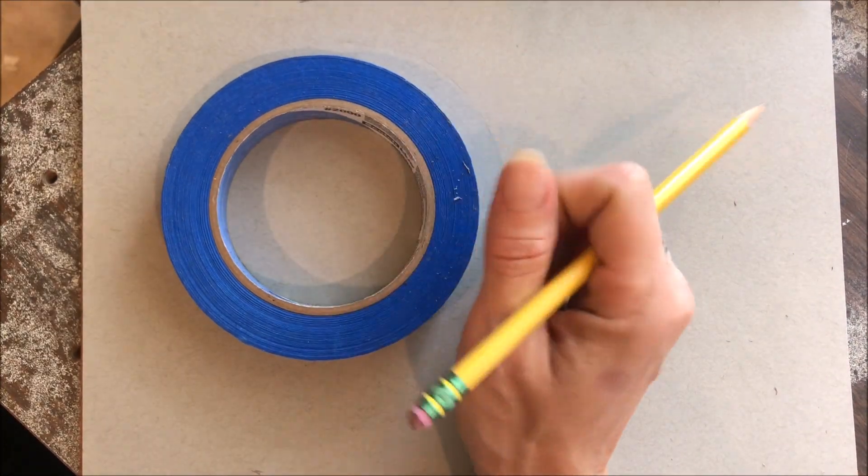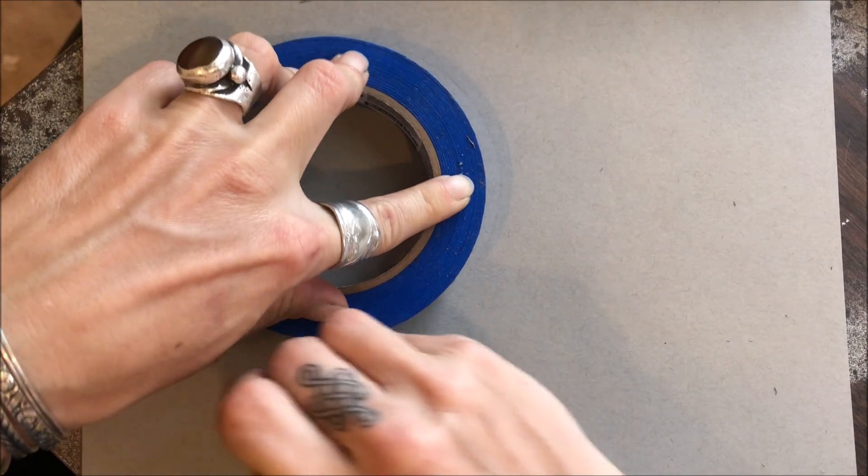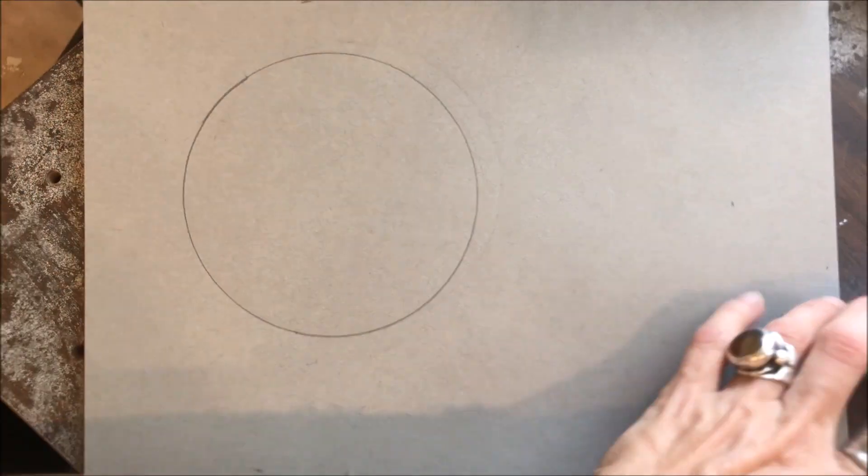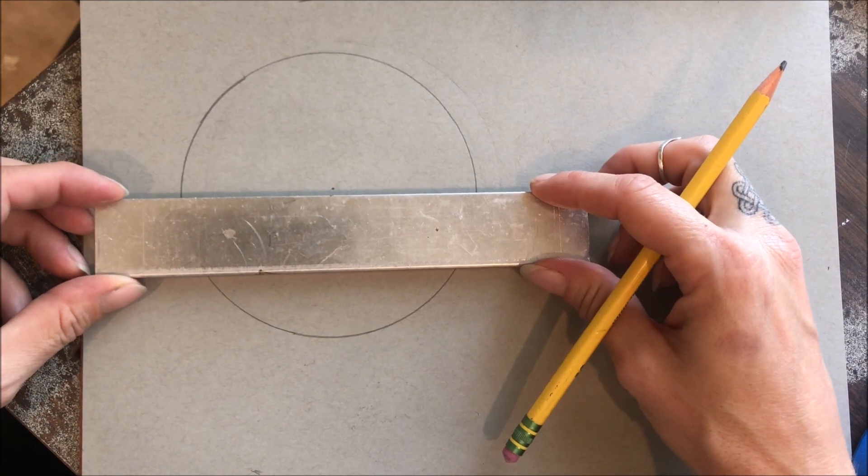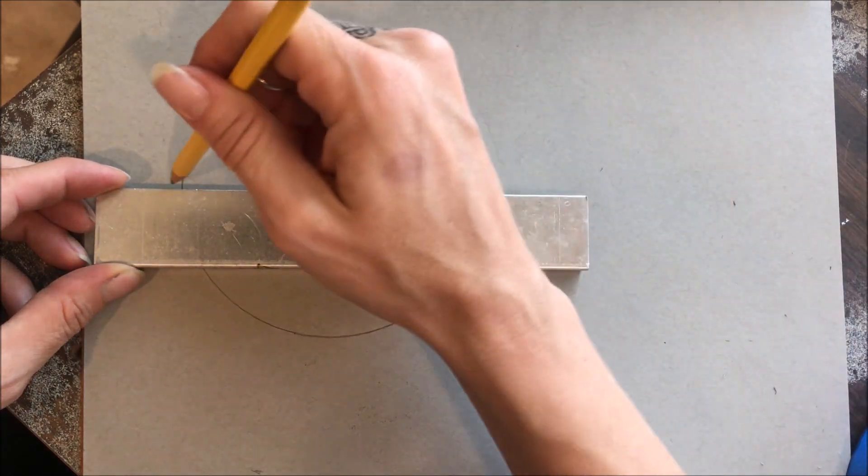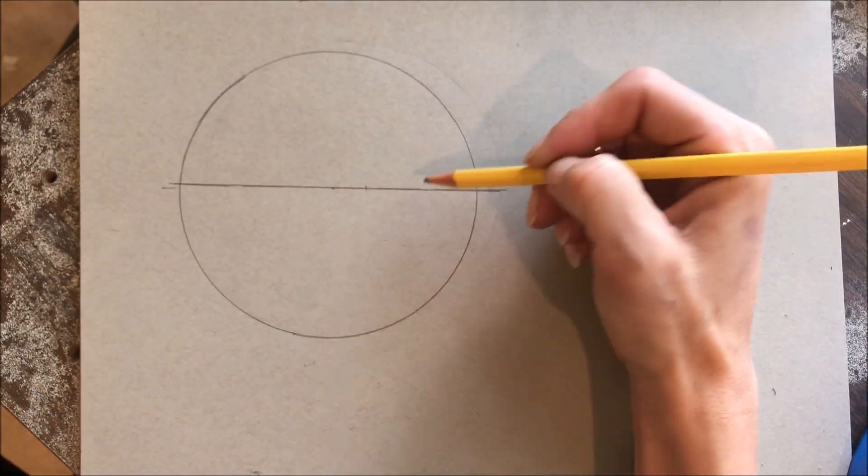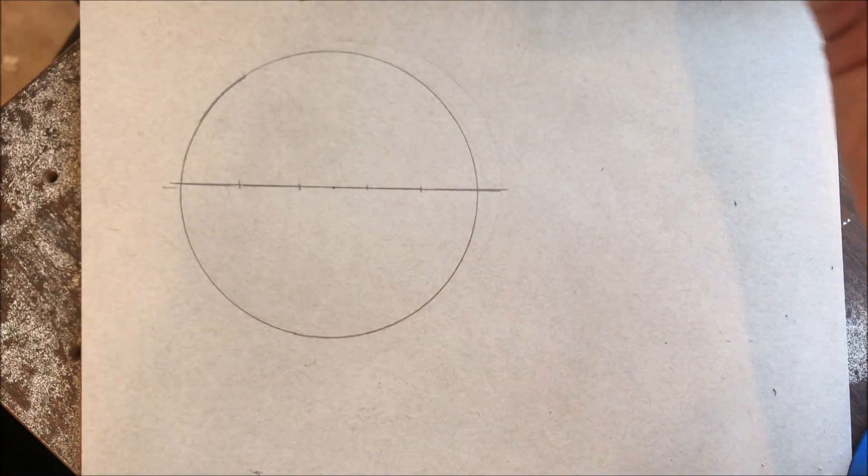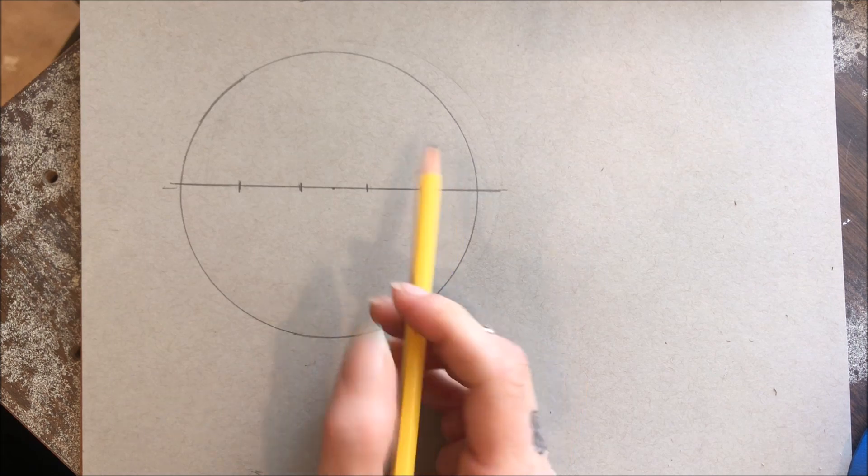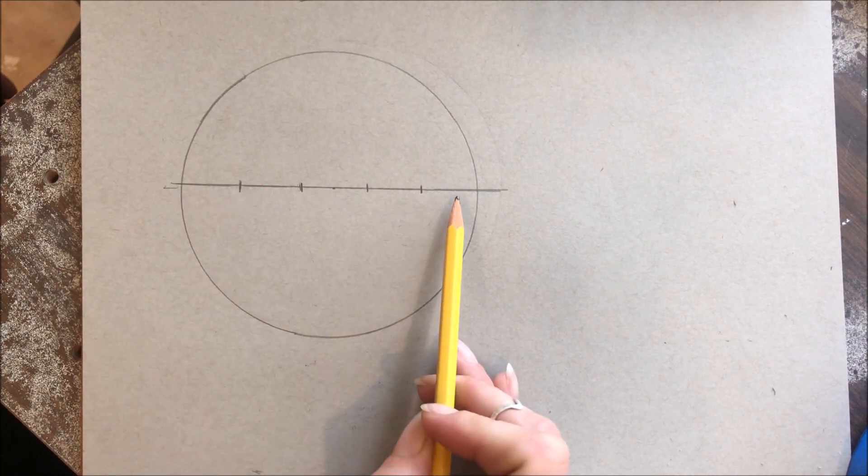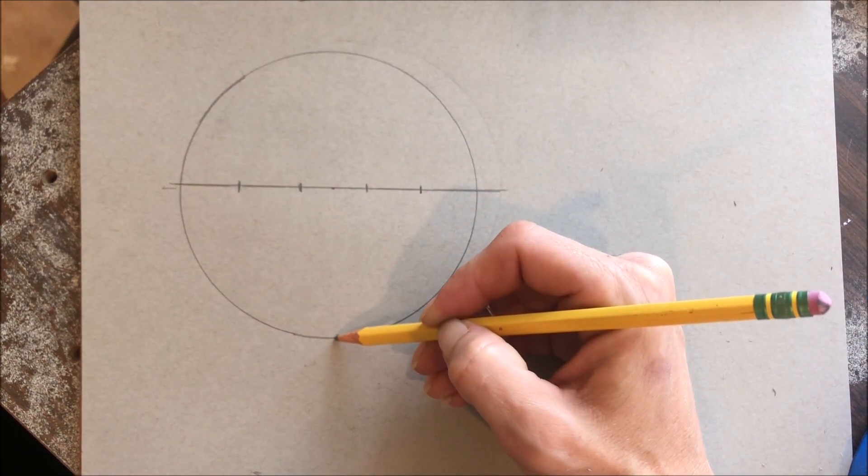All right, we're going to get right into it today because today's video is going to be a bit of a doozy. So we're going to want to start off with a nice strong circle and find your center because you want to put a perfectly horizontal line right in the middle of it. And then we want it to be split into five even parts.